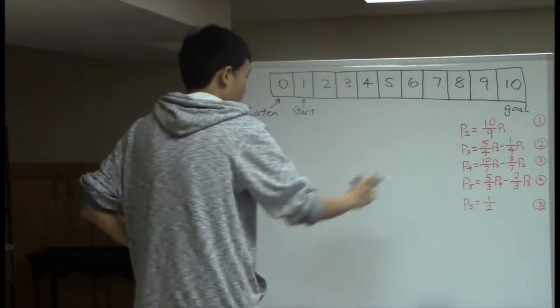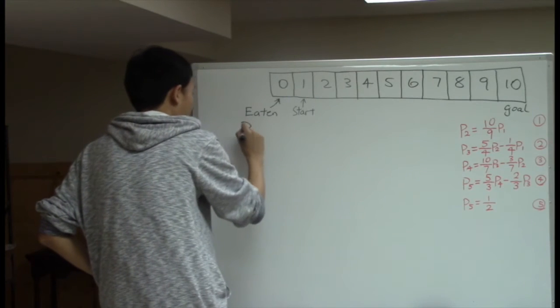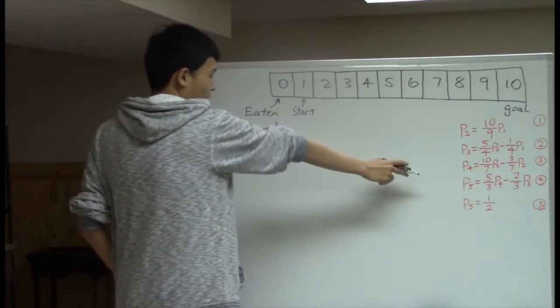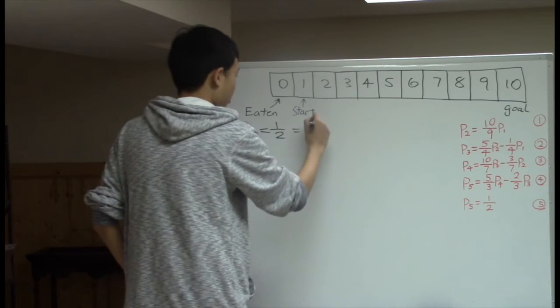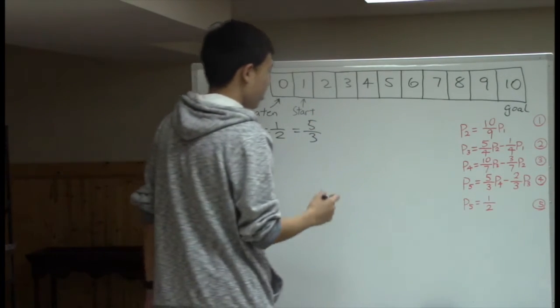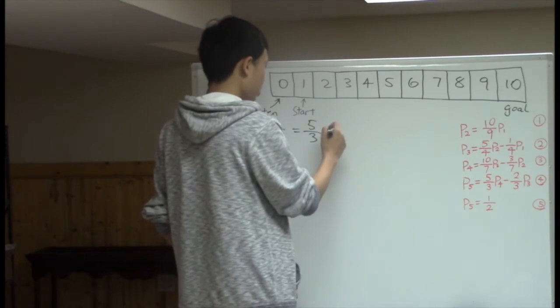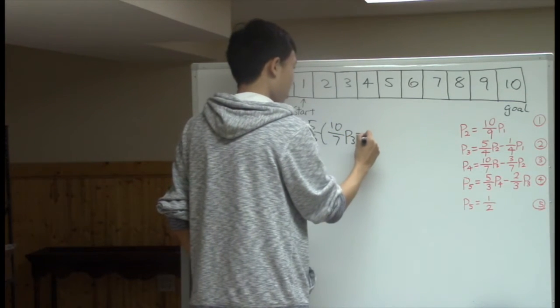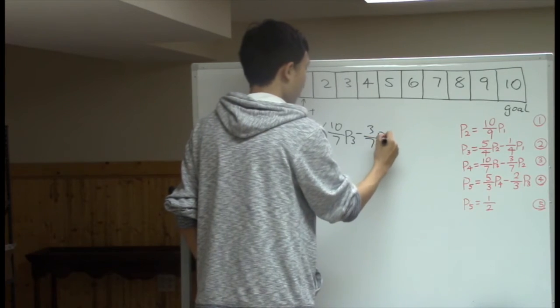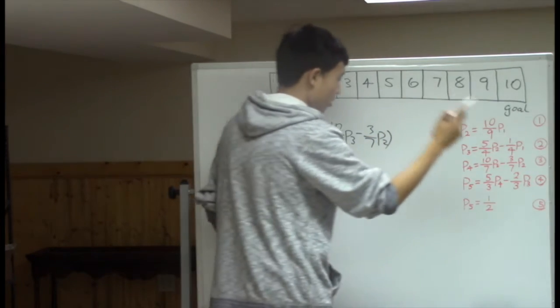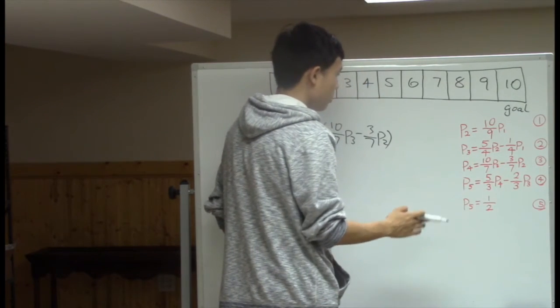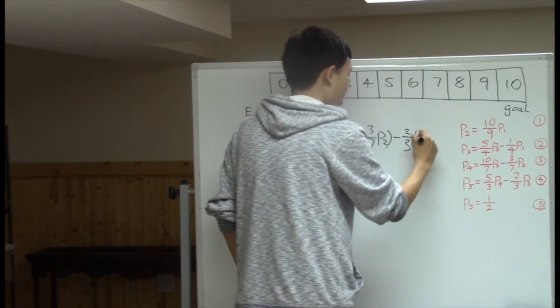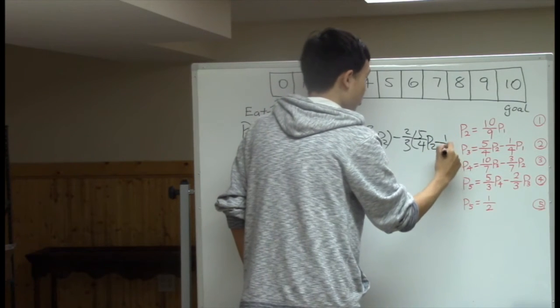So, now, from equation 5, we have p5 equals 1/2. Which, also according to this equation number 4, we have 5/3 p4. But, instead of saying p4 again, we use equation number 3 to replace it, which is 10/7 p3 minus 3/7 p2. And in the original equation number 4, there is a 2/3 p3. But instead of p3, we use equation number 2, which is minus 2/3 times 5/4 p2 minus 1/4 p1.